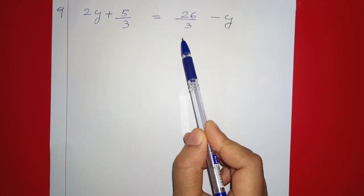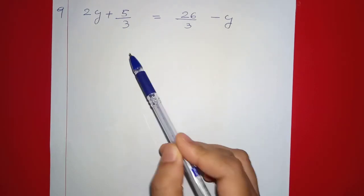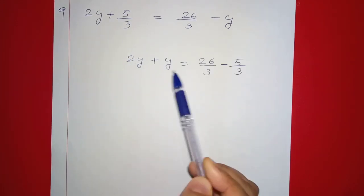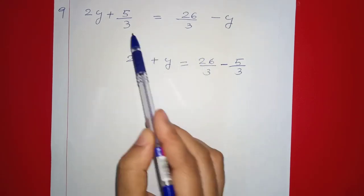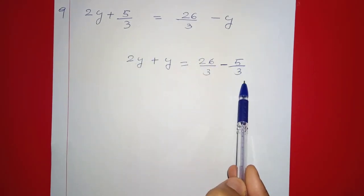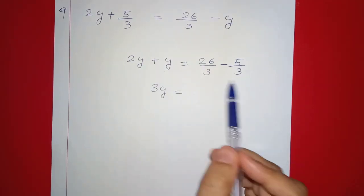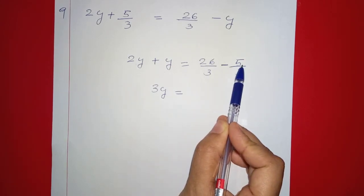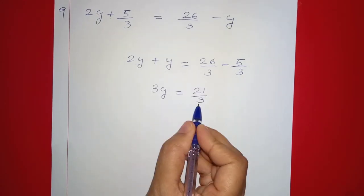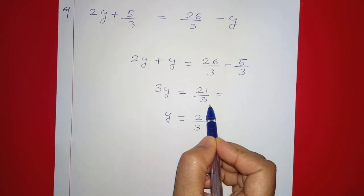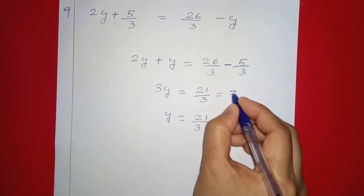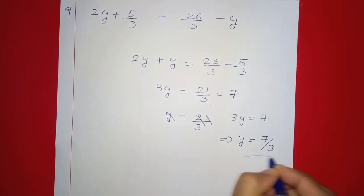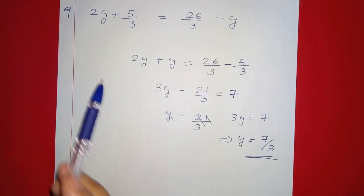Next: 2y plus 5 by 3 equals 26 by 3 minus y. We collect y terms: 2y plus y equals 26 by 3 minus 5 by 3. So 3y equals 21 by 3, which equals 7. This implies y equals 7 by 3. Substituting y equals 7 by 3 into left-hand side and right-hand side confirms they are equal.